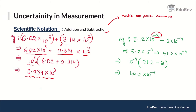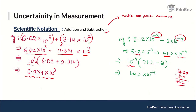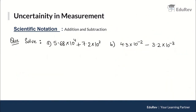For subtraction: 10⁻³ and 10⁻⁴ — write both in terms of 10⁻⁴. Shift the decimal one place to the right, making the first term 51.2 × 10⁻⁴. Then subtract the numerical terms: 51.2 − 2 = 49.2, so the answer is 49.2 × 10⁻⁴.